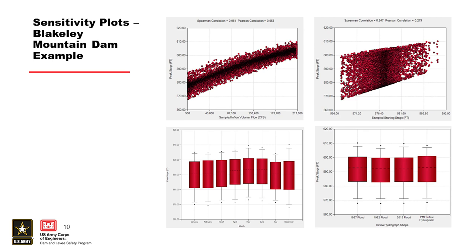The box and whisker plot on the bottom left shows flood seasonality. For this dam, floods in May generally had higher peak stages, which was expected because starting stages tended to be higher during that month, and there's a wide range of peak stages observed across the months. This dam is located in the Arkansas area where spring floods are expected, so that result makes sense. The final plot at the bottom right shows the inflow hydrograph shapes, and a similar result is seen — there isn't a big difference in the impact of the different hydrograph shapes, though different shapes are still being represented.